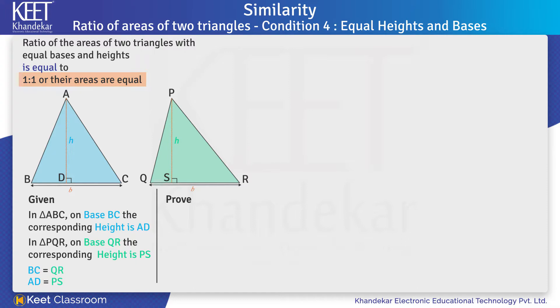Therefore, in the proof part, we have: Area of triangle ABC upon area of triangle PQR equals 1 upon 1. That is, area of triangle ABC is equal to area of triangle PQR.